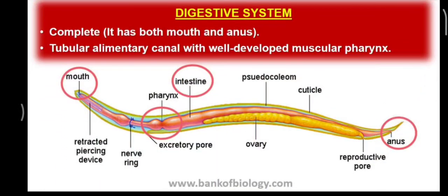The digestive system is a complete system — it has both a mouth and anus, like Platyhelminthes. There is a well-developed tubular gut with a muscular pharynx; here is the mouth, muscular pharynx, and intestine — all the structures are present.